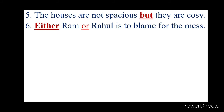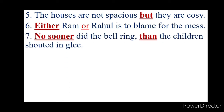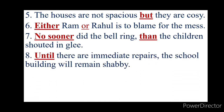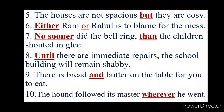Number 6: Either Ram or Rahul is to blame for the mess. 'Either...or' is used to join sentences which present two choices of which only one can be taken up. Seven: No sooner did the bell ring than the children shouted in glee. Eighth: Until there are immediate repairs, the school building will remain shabby. Ninth: There is bread and butter on the table for you to eat. Tenth: The hound followed its master wherever he went.